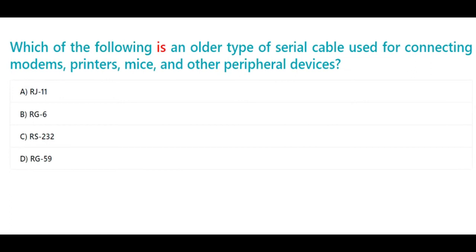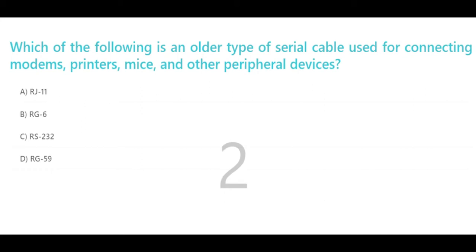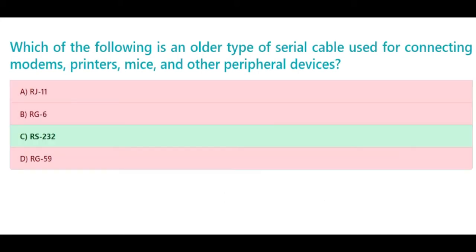Which of the following is an older type of serial cable used for connecting modems, printers, mice, and other peripheral devices? a. RJ11, b. RG6, c. RS-232, d. RG59. The correct answer is c. RS-232.